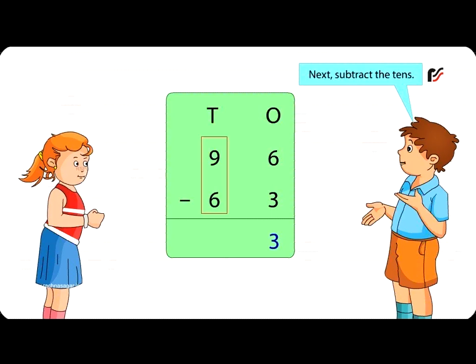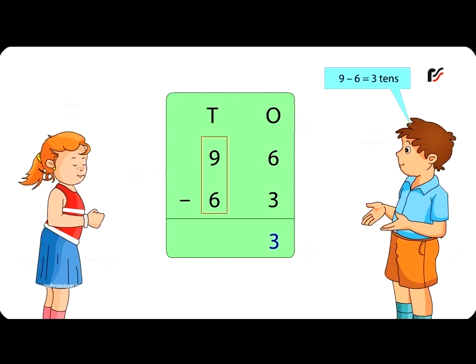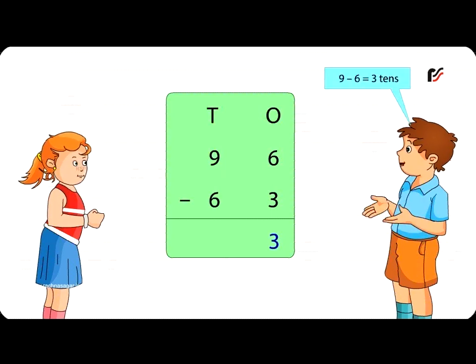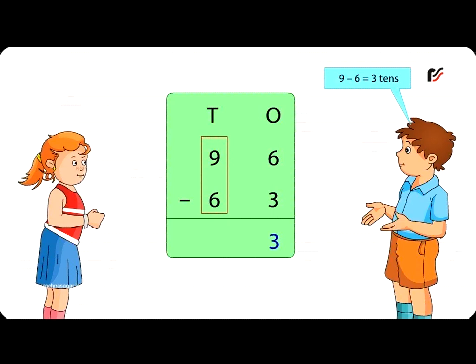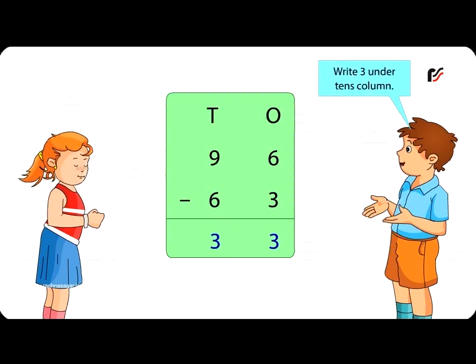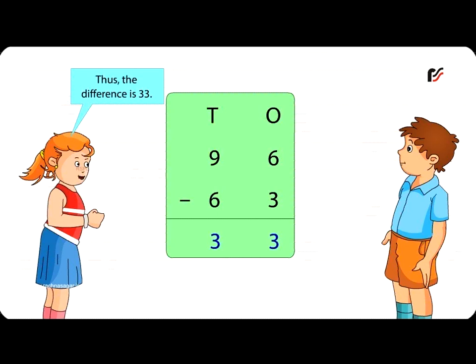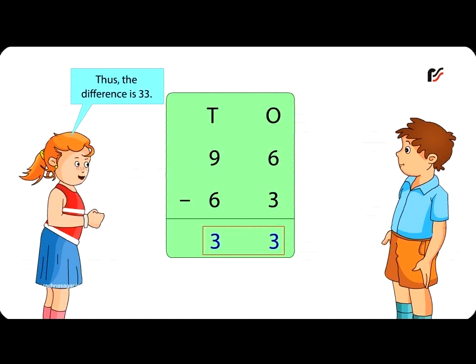Next, subtract the tens. Nine minus six is equal to three tens. Write three under the tens column. Thus, the difference is 33.